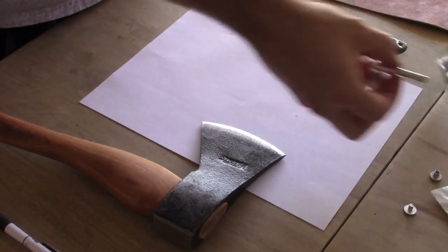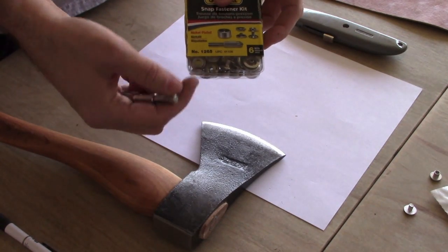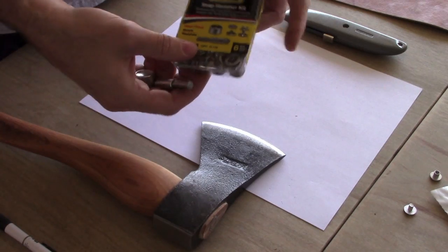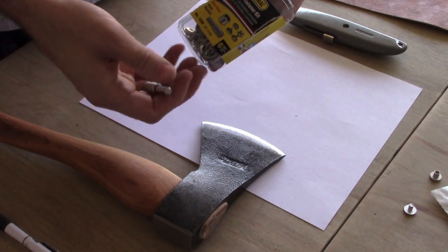We're going to be using some snaps, so you're going to need a fastener tool that works with the particular type of snap that you have. Usually these come in sets, but you want to make sure that you have the correct one.